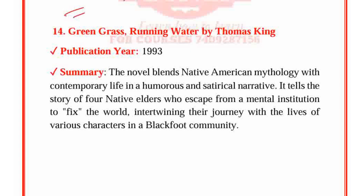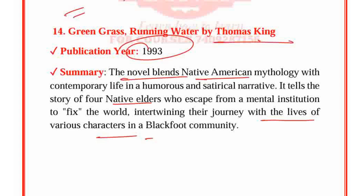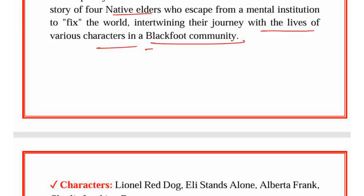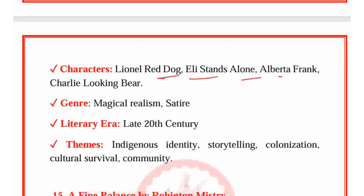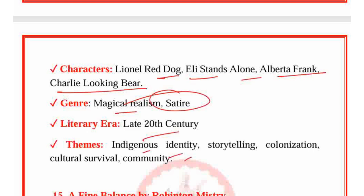Green Grass, Running Water by Thomas King, published in 1993. The novel blends Native American mythology with contemporary life in a humorous and satirical narrative. It tells the story of four native elders who escape from a mental institution to fix the world, intertwining their journey with the lives of various characters in the Blackfoot community. Characters: Lionel Red Dog, Ellie Stands Alone, Alberta Frank and Charlie Looking Bear. Genre: Magical realism, Satire. Period: Late 20th century. Themes: Indigenous identity, Storytelling, Colonization, Cultural survival and Community.